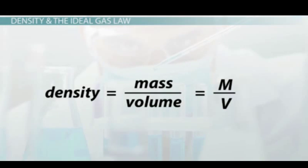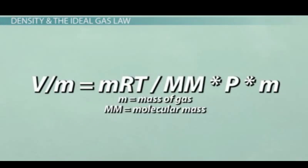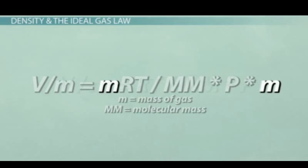Remember our original equation for density is mass divided by volume. Since we have volume on one side, we divide both sides by m. Since mass is on the top and the bottom of the fraction on the right, they cancel each other out.